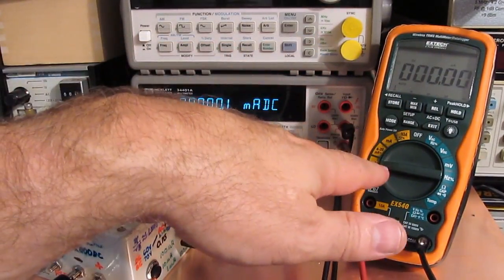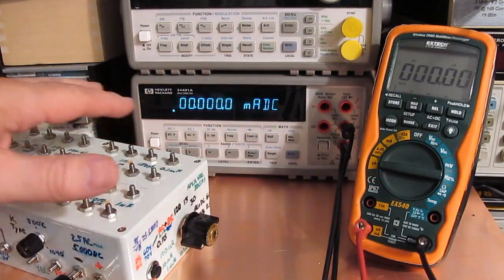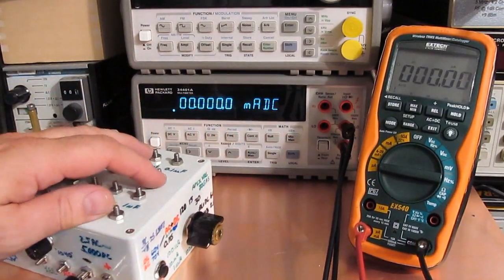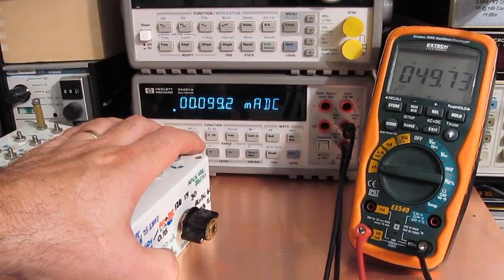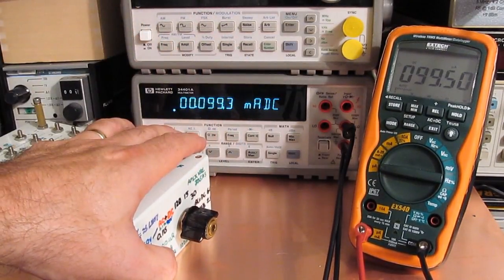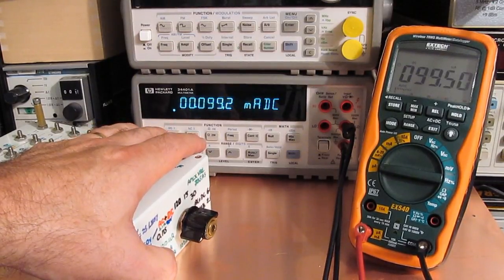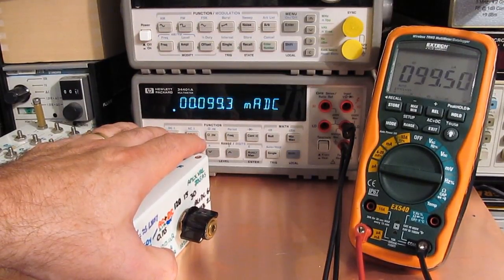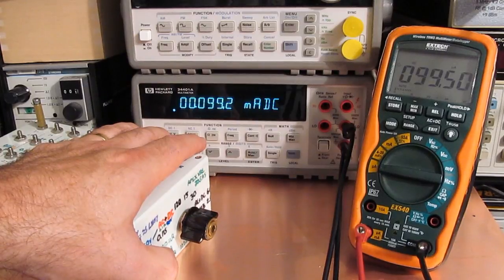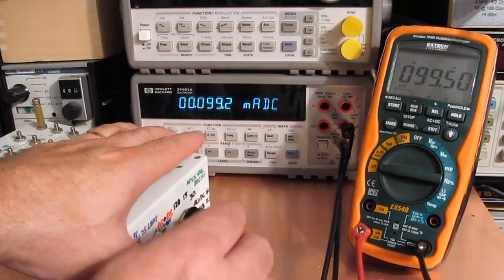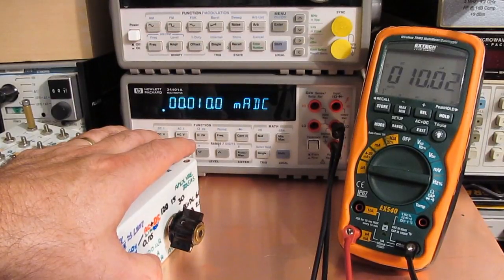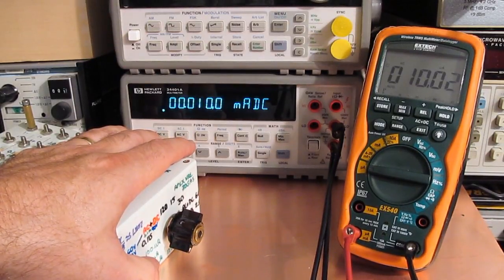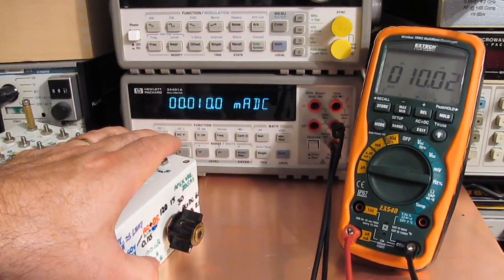You can see I have the XTAC set to its microamp range and I've just got them attached to my test box here. Let's start by injecting 100 microamps. You can see we are 99.3 or so, 99.2 microamps on the HP versus 99.5 on the XTAC. This is with 10 microamps applied and you can see we're 10.0 versus 10.02.